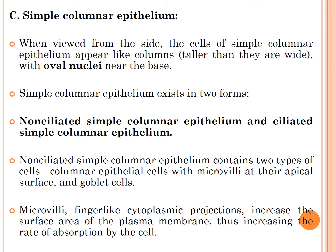Simple columnar epithelium exists in two forms: non-ciliated and ciliated. Non-ciliated simple columnar epithelium contains two types of cells: columnar epithelial cells with microvilli at their apical surface, and goblet cells. Microvilli are finger-like cytoplasmic projections that increase the surface area of the plasma membrane, thereby increasing the rate of absorption by the cell.